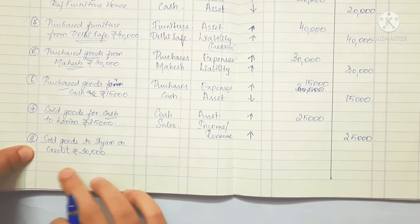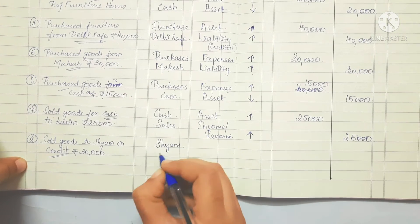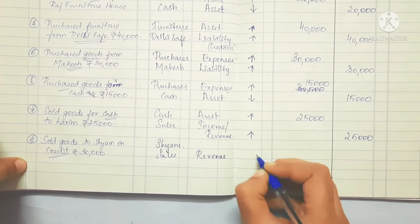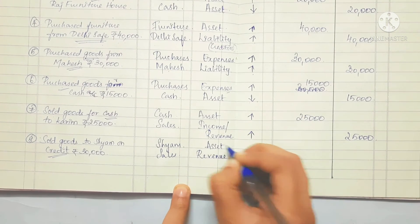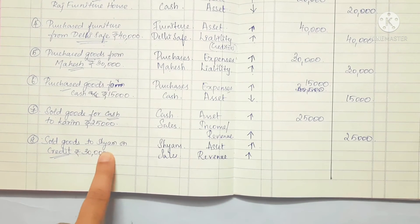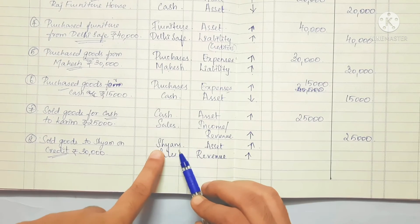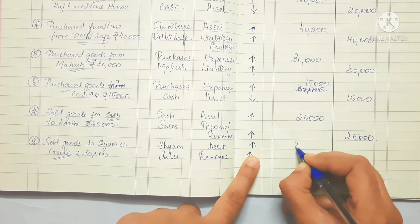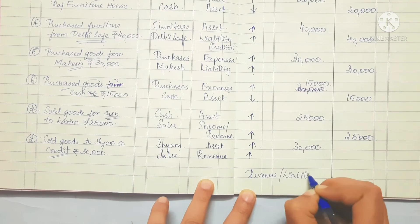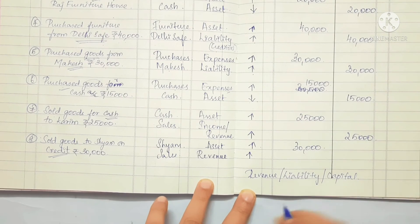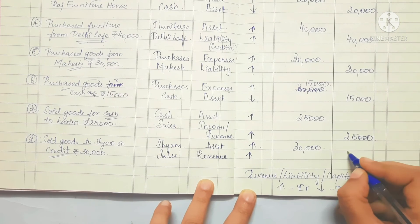Next transaction: sold goods to Sham on credit. The accounts involved are Sham's account and sales. Sales is revenue; revenue increases, so we credit sales. Sham is a debtor — an asset. Asset increases, so we debit Sham's account.